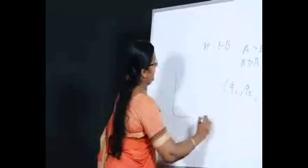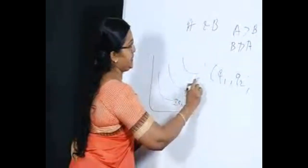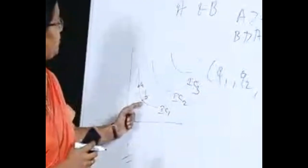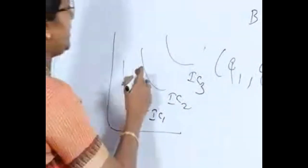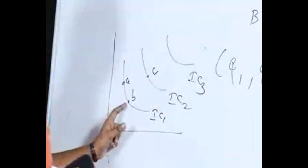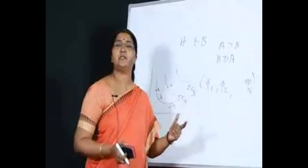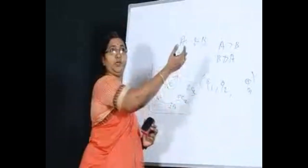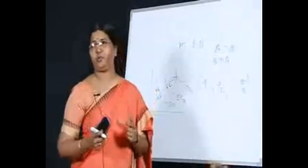In an indifference map, different indifference curves IC1, IC2, and IC3 are present. When the consumer moves between combinations A and B on the same curve, there is no change in satisfaction. However, when moving from B to C — that is, from a lower to a higher indifference curve — satisfaction increases. Therefore, all consumers will always try to reach the highest indifference curve possible.